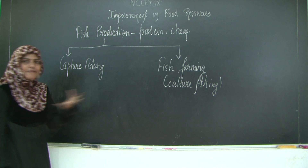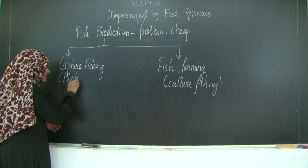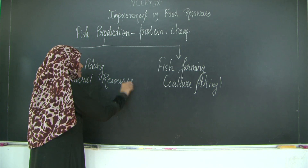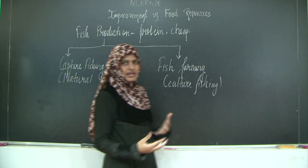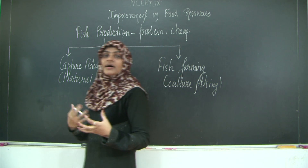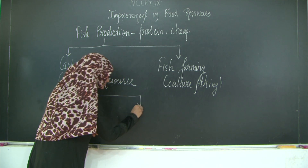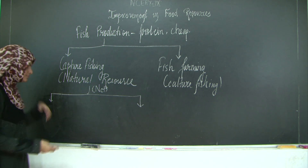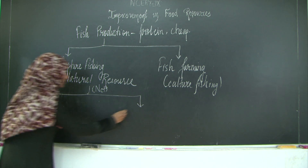Capture fishing means capturing the fish from natural resources. We can have two types of fish - freshwater fish from rivers and inland fisheries, or marine water fish. Both can be captured with the help of a net. So it can be either inland fishing or marine fishing.